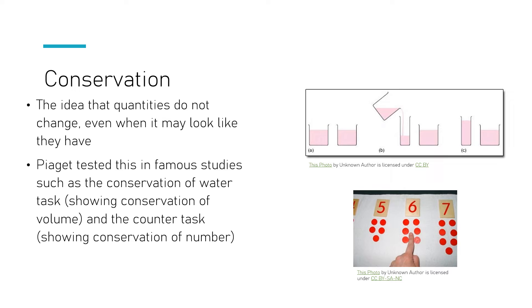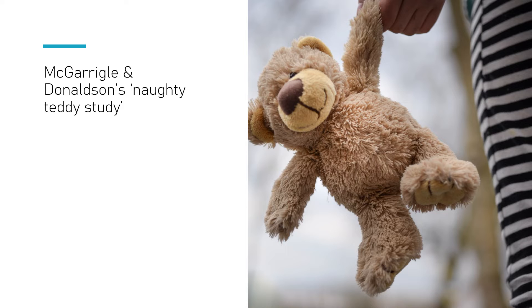So again, conservation is shown to be poorer with younger children and better as they get older, so it was a key part of his theories on conservation. What you need to be aware of is another one of the key studies. This study is named on the spec: McGarrigle and Donaldson's naughty teddy study.